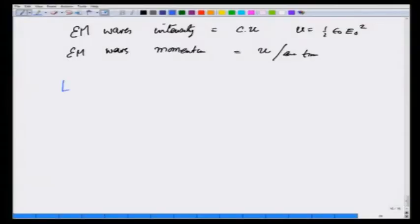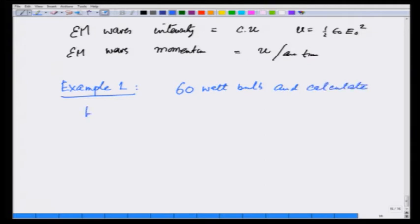As example one, let us take a 60 watt bulb and calculate electric field amplitude and magnetic field amplitude at a distance of 1 meter from the bulb.